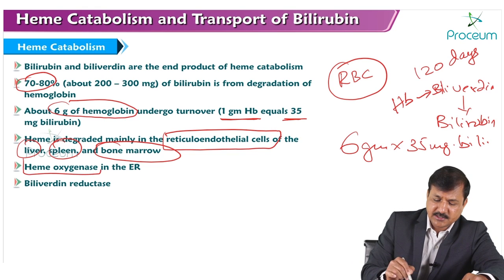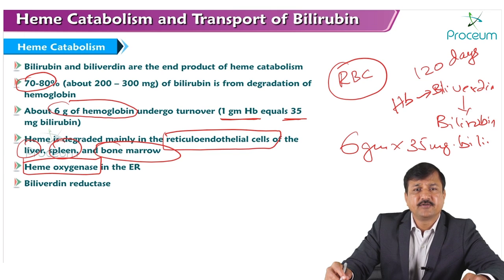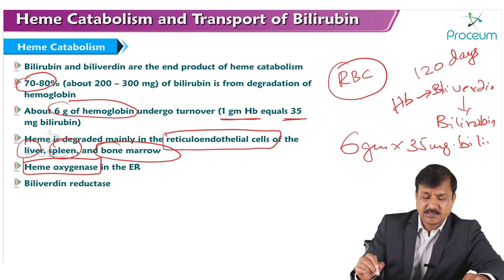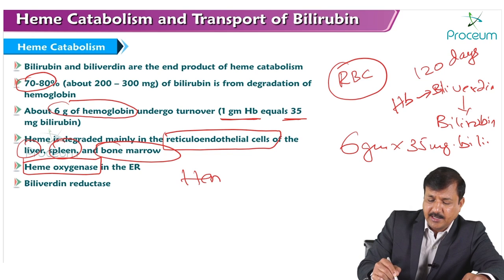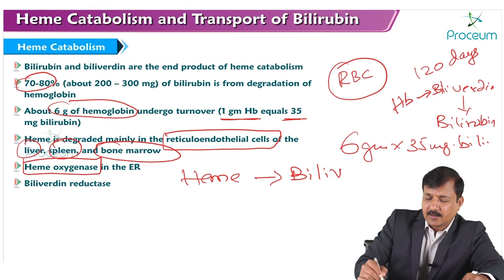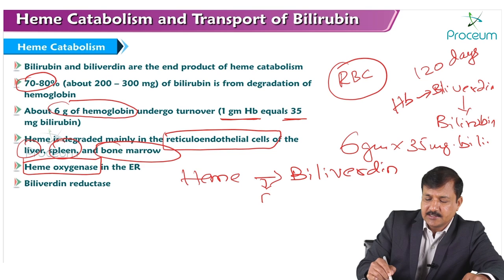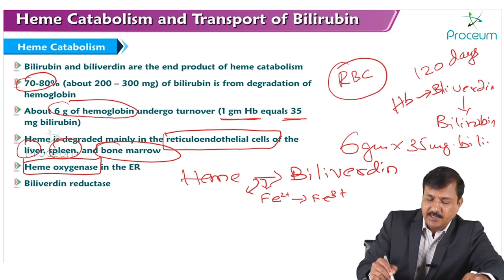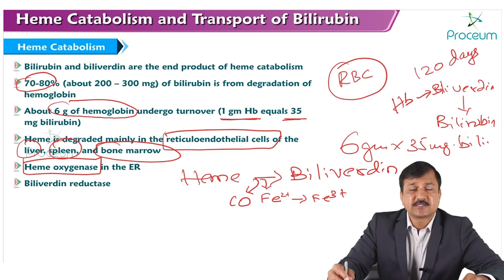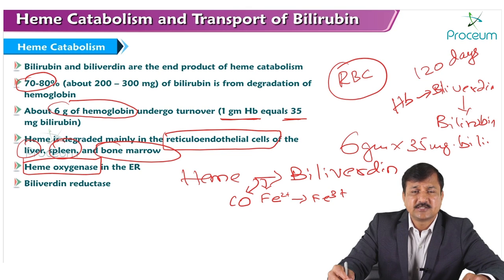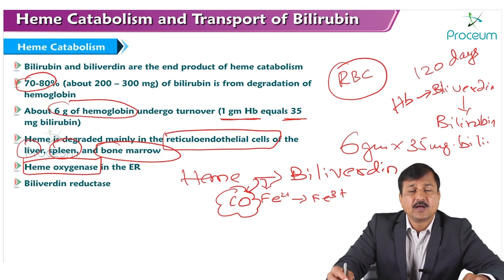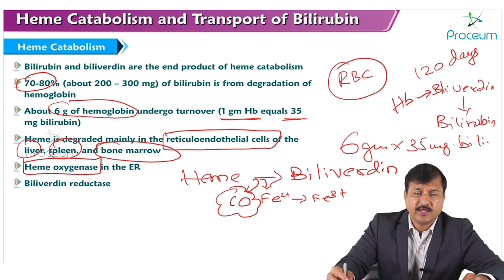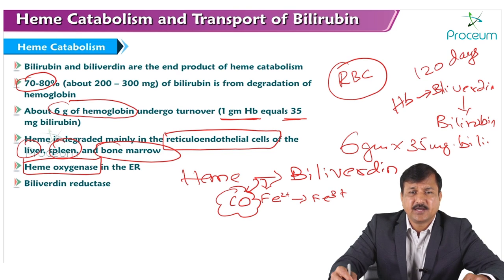The reticuloendothelial system present in the spleen, liver, and bone marrow expresses a heme oxygenase enzyme. This enzyme breaks heme into biliverdin by opening the porphyrin ring. During this process, ferrous iron is released and converted to ferric iron, and carbon monoxide is also released. This is the only source of carbon monoxide in our body, meaning the amount of CO exhaled in breath is equal to the amount of heme converted to biliverdin.